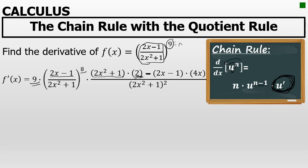Minus the numerator unchanged, 2x minus 1, times the derivative of the denominator. The derivative of the denominator 2x squared plus 1 is 4x, all over the original denominator squared. So I have my derivative. However, it's not in simplest form.